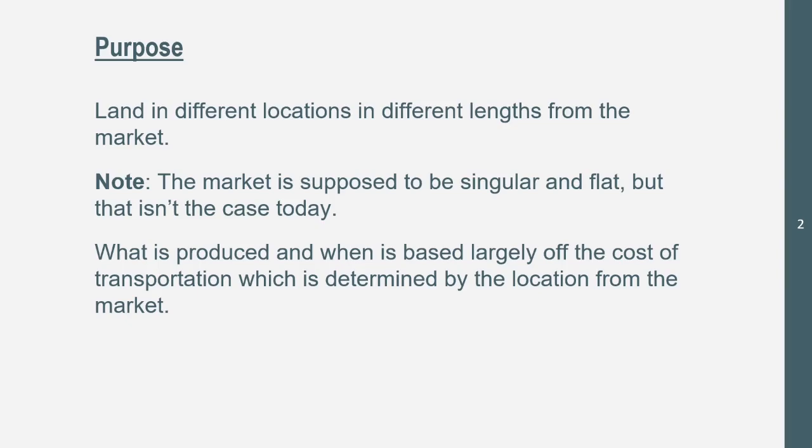The purpose of the Von Tunen model shows land in different locations at different distances from the market. So what is used in this land and how far it is from the market? This can also be determined by how accessible transportation is. Something to know is that the market is supposed to be singular and flat, but we know today that isn't the case with markets.